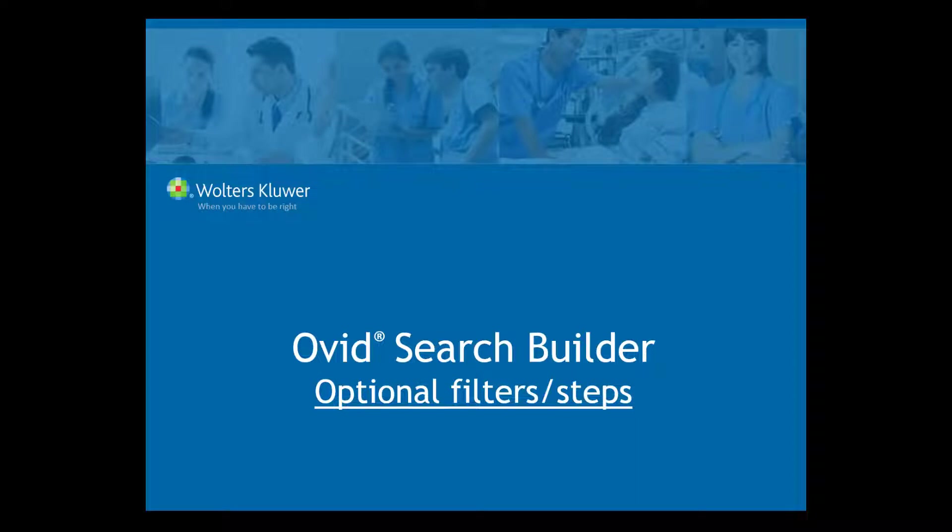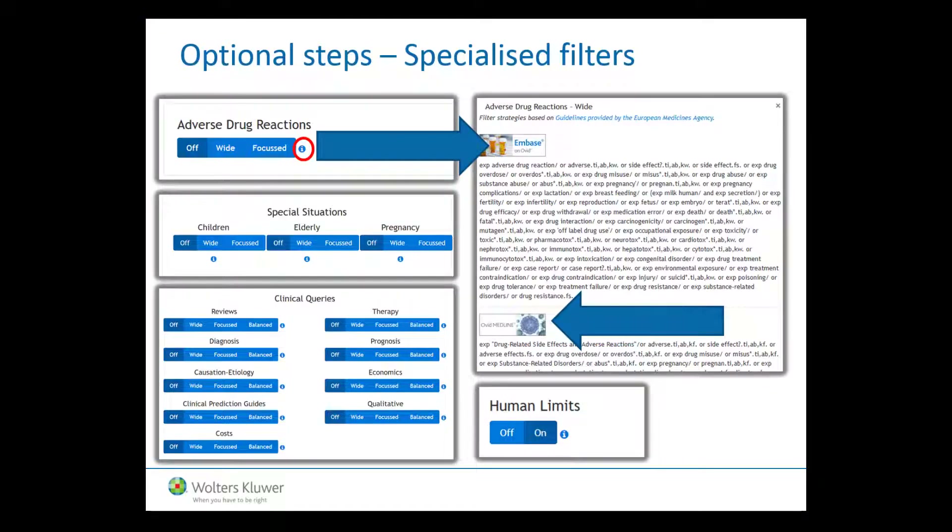We will quickly highlight the optional filters and steps available within the Search Builder tool. There are optional filters which can be applied directly to your keyword search. Some of these specialized filters include adverse drug reactions, special situations, clinical queries, and a filter for human-only studies. The filters are available as wide or focused options, and this allows users to customize their searches based on their particular search criteria and needs. Remember, after selecting a wide or focused profile, click on the Information button to view its specific characteristics.